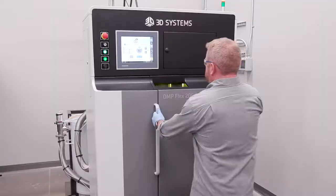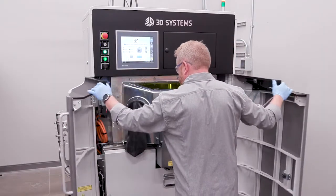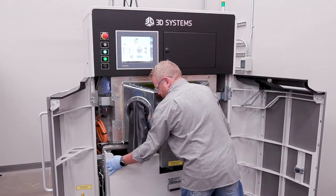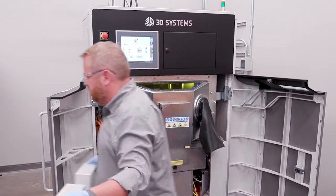The DMP Flex 200 is a compact system. You can put it into almost any location from a size perspective. You just need to have that space, that room. It doesn't need to be that large—a little bit bigger than a closet.